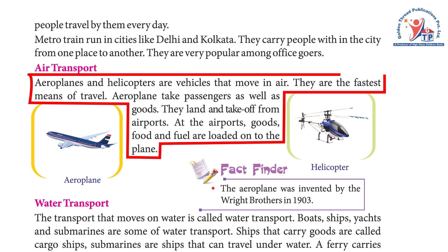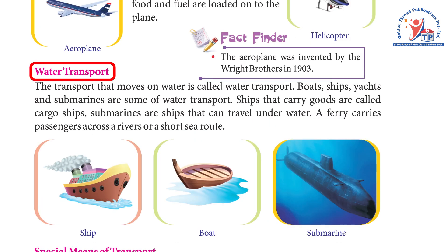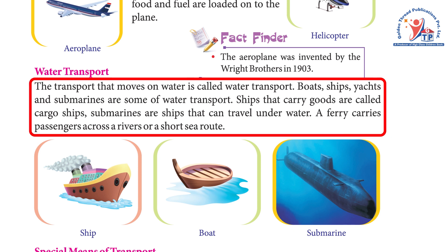Air transport: Aeroplanes and helicopters are vehicles that move in the air. They are the fastest means of travel. Aeroplanes take passengers as well as goods. They land and take off from airports. At airports, goods, food, and fuel are loaded onto the plane. Fact: The aeroplane was invented by the Wright Brothers in 1903.